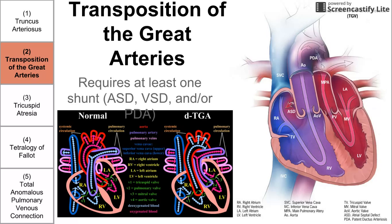The right side of the heart is pumping through the systemic circulation, and that's an isolated system from the left side of the heart, which is pumping through the pulmonary circulation. In order for somebody with transposition of the great arteries to survive, they need at least one shunt. This could be an atrial septal defect, a ventricular septal defect, or a PDA — a patent ductus arteriosus — which is a connection between the aorta and the pulmonary artery. In the image on the right, we see an atrial septal defect allowing for mixing of the blood, turning it purple to pump through the systemic circulation, allowing the patient to survive.